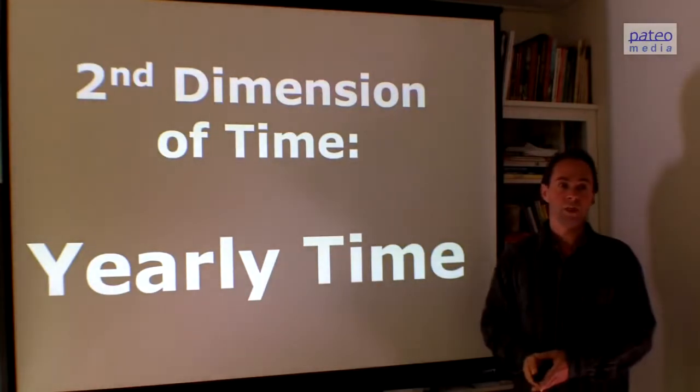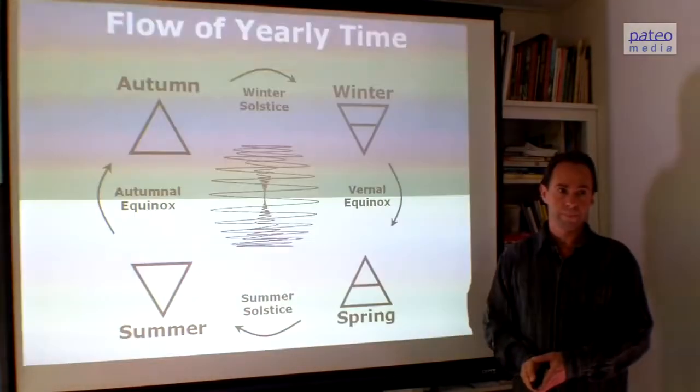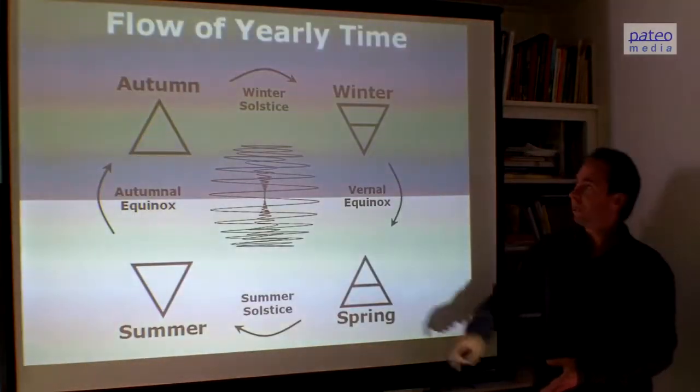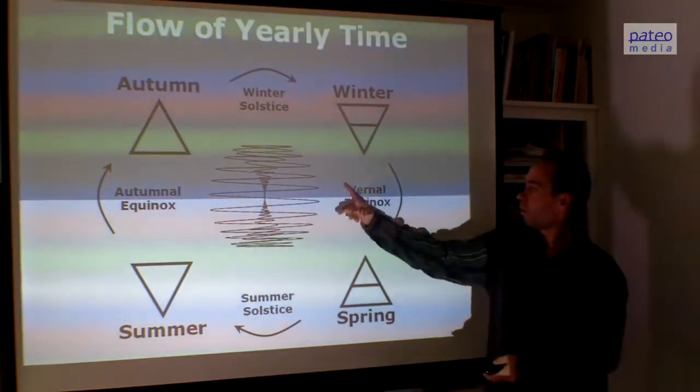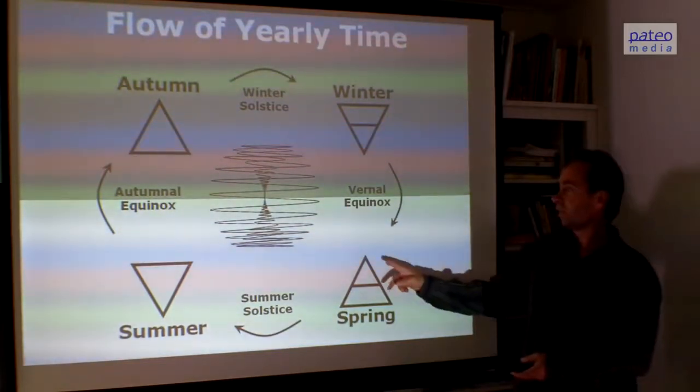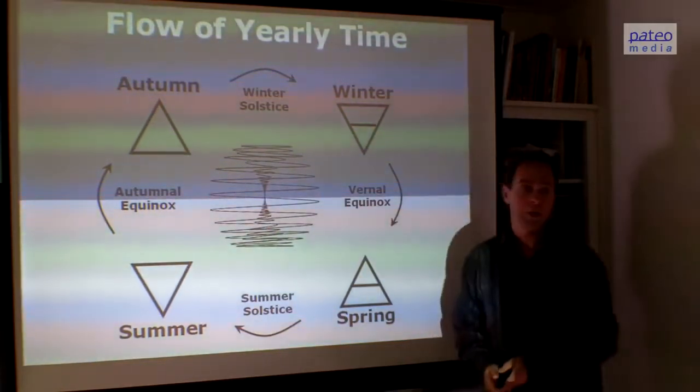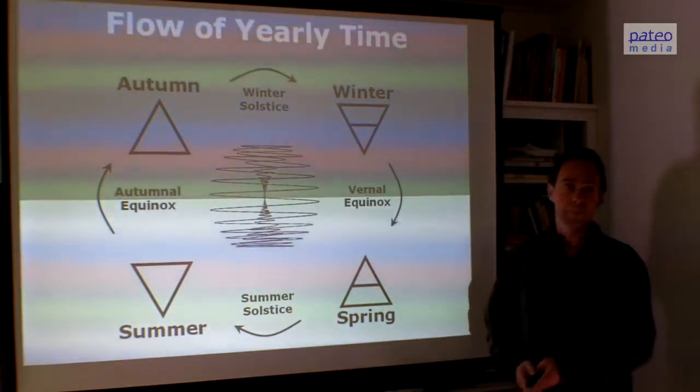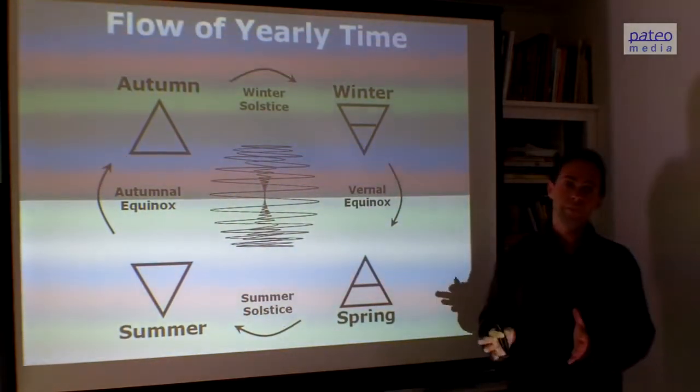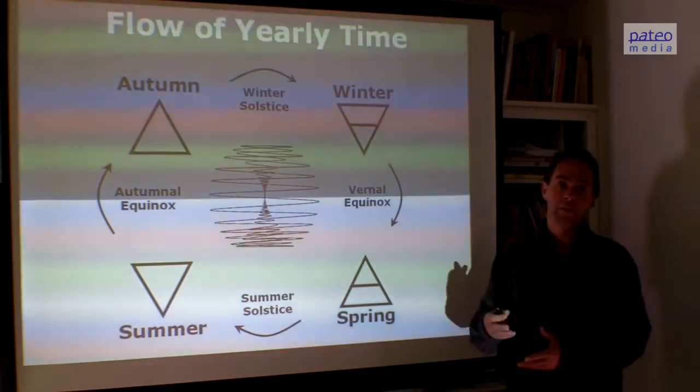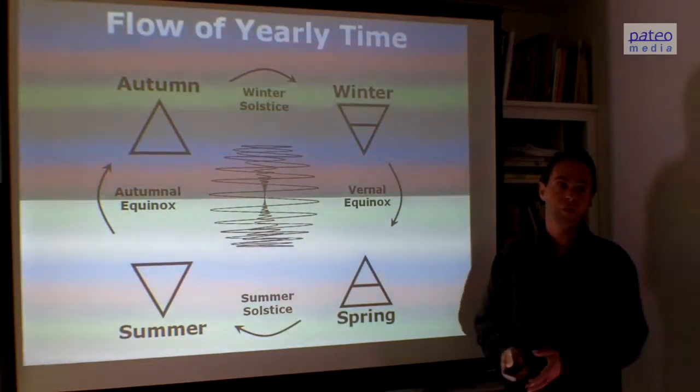Now let us look at the second dimension of time: yearly time. Also in yearly time, we find the same four divisions. We have winter, then the vernal equinox, the start of spring. We go through the zero point in the middle. Then we're in the spring, then we go to the summer, and then we go to autumn. It's the same as in the daily time, but now it takes more than 365 times longer.